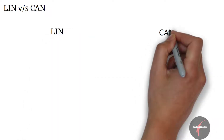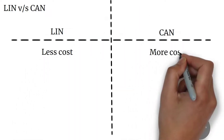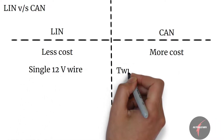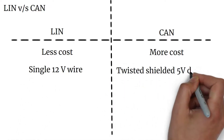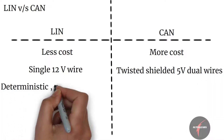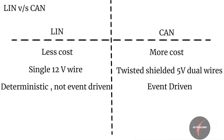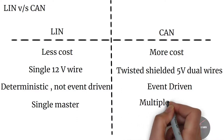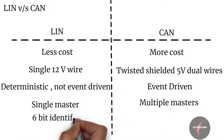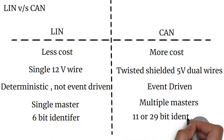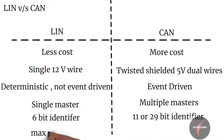Comparing LIN and CAN: LIN is less costly than CAN. LIN uses a single 12V wire while CAN uses twisted shielded 5V dual wires. LIN is deterministic and not event-driven, while CAN is event-driven. LIN clusters have a single master while CAN has multiple masters. LIN uses a 6-bit identifier while CAN uses an 11 or 29-bit identifier. Lastly, LIN offers a maximum of 20 kilobits per second speed while CAN offers up to 1 megabit per second.